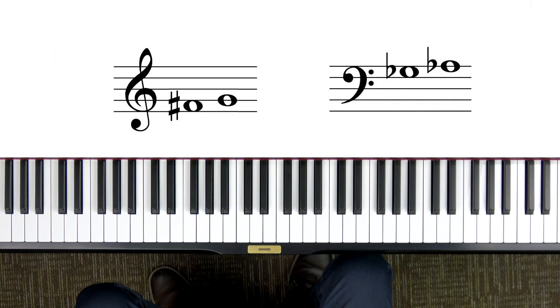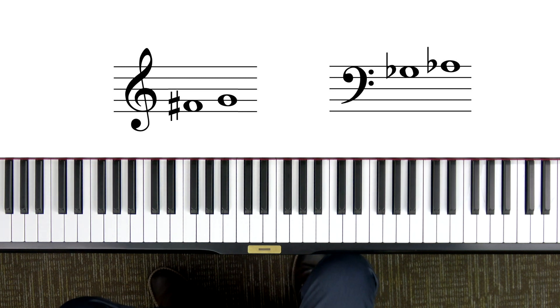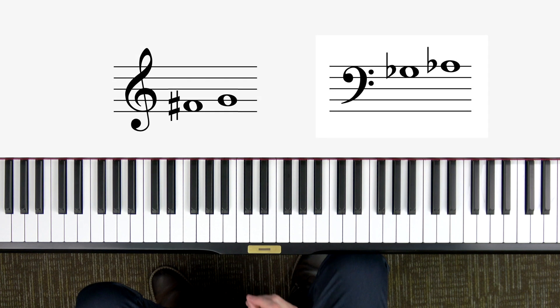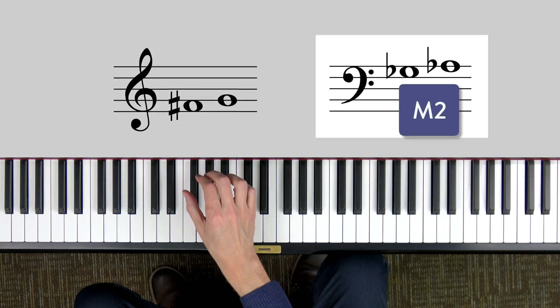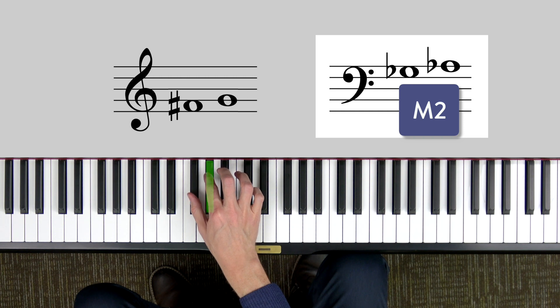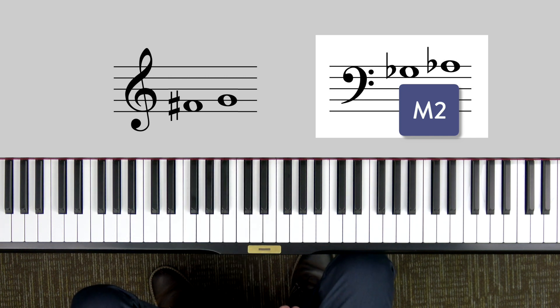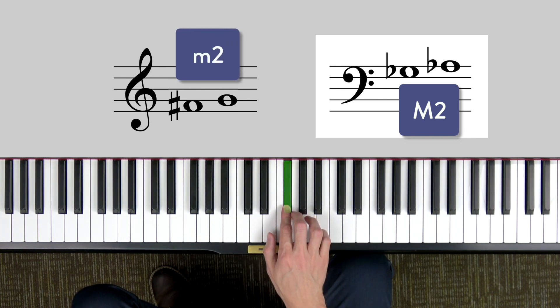Let's try another one. Point to the two notes that form a major second. If you're pointing to the one on the right you are correct. We have G-flat to A-flat. Notice that has one key in between, so that is a major second. On the left we had an F-sharp to a G, which is a minor second.